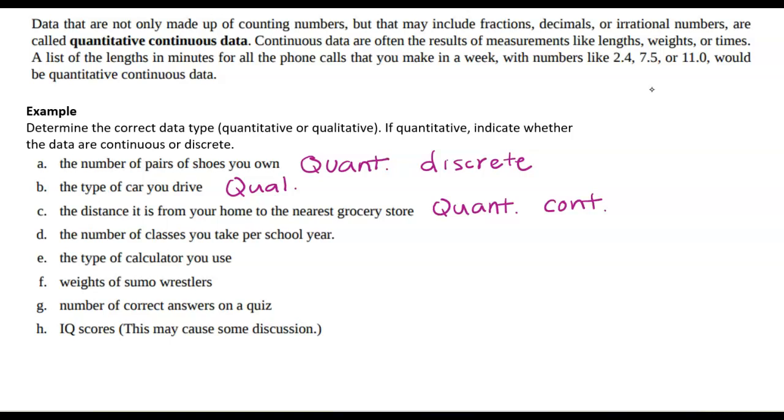The number of classes you take per school year. Again, we can find that average, so that's quantitative. But that's going to be discrete. Now, the average might be a decimal, but when we're actually collecting the data itself, it's only whole numbers. I want to make sure I make that very clear.